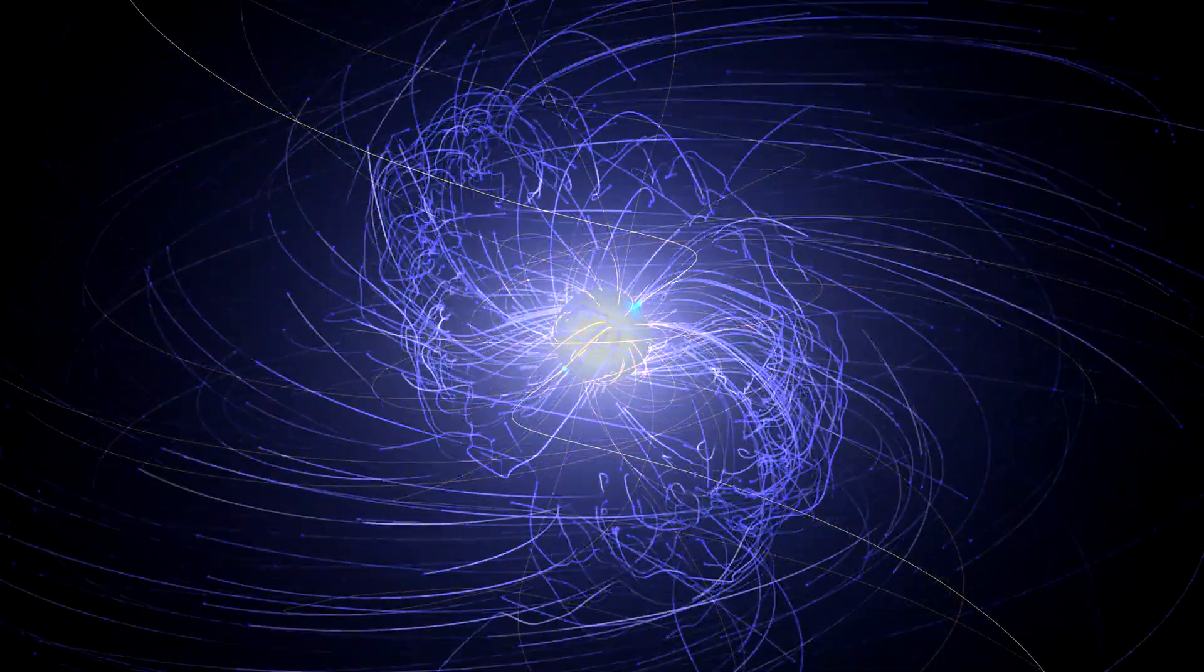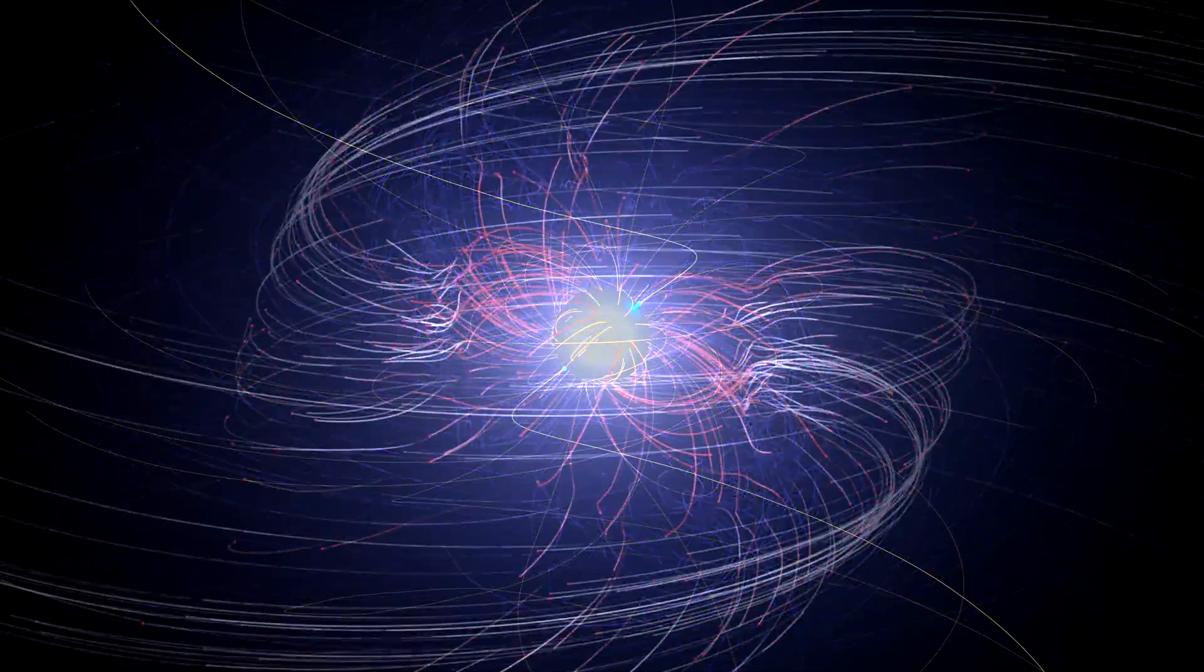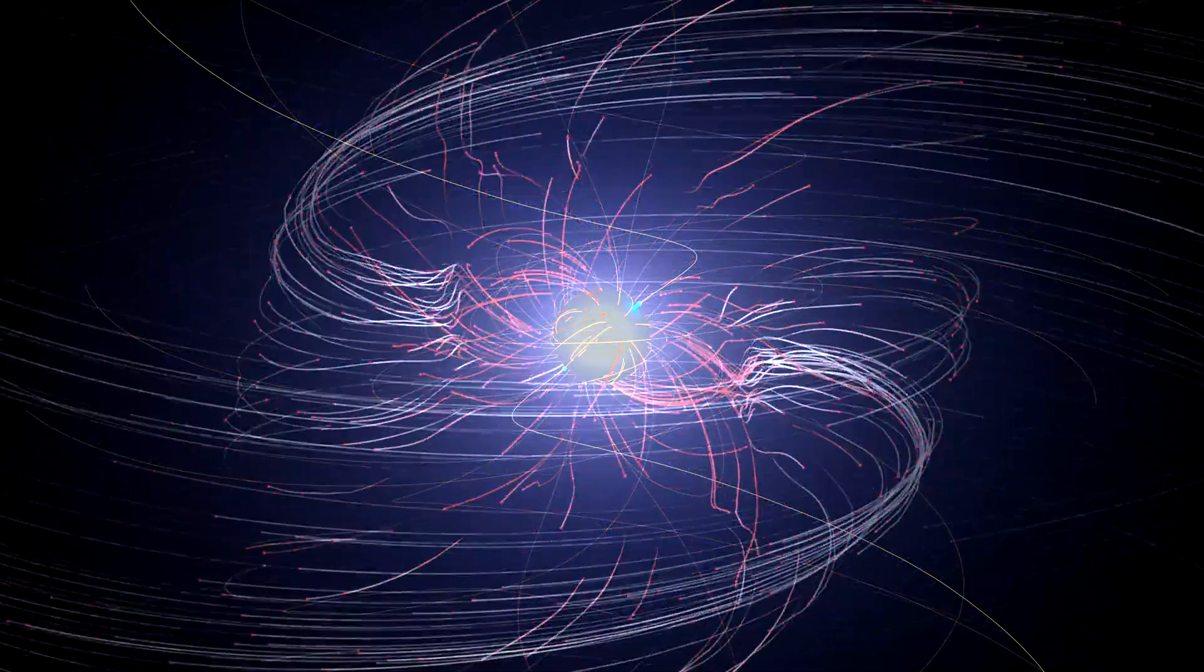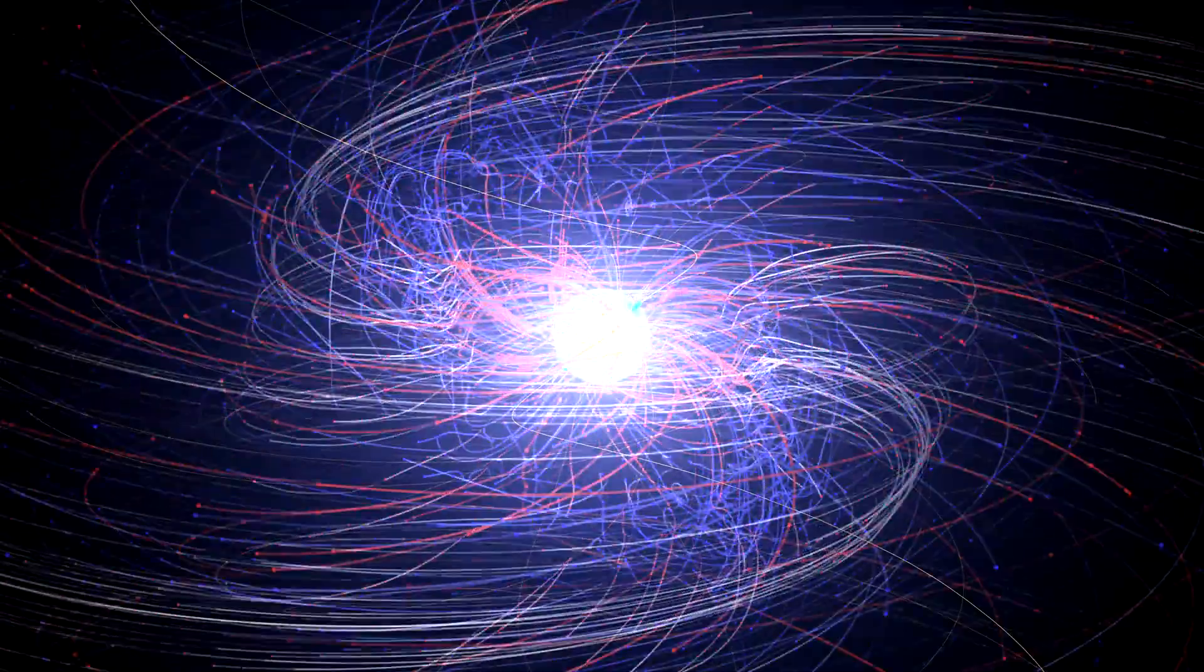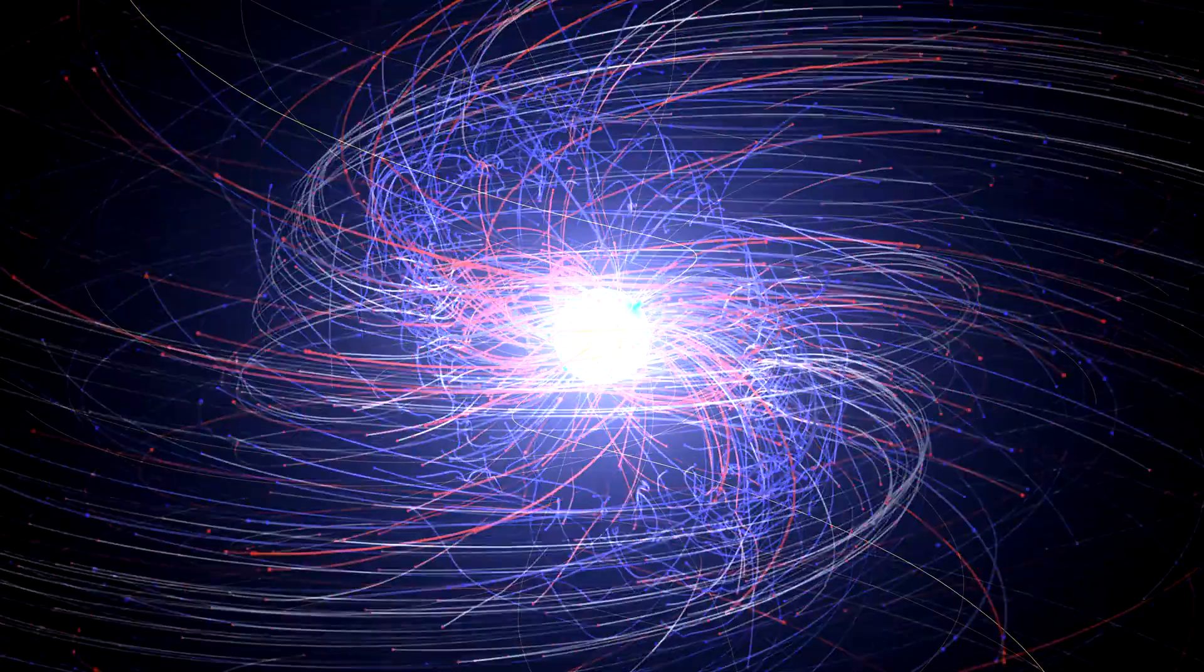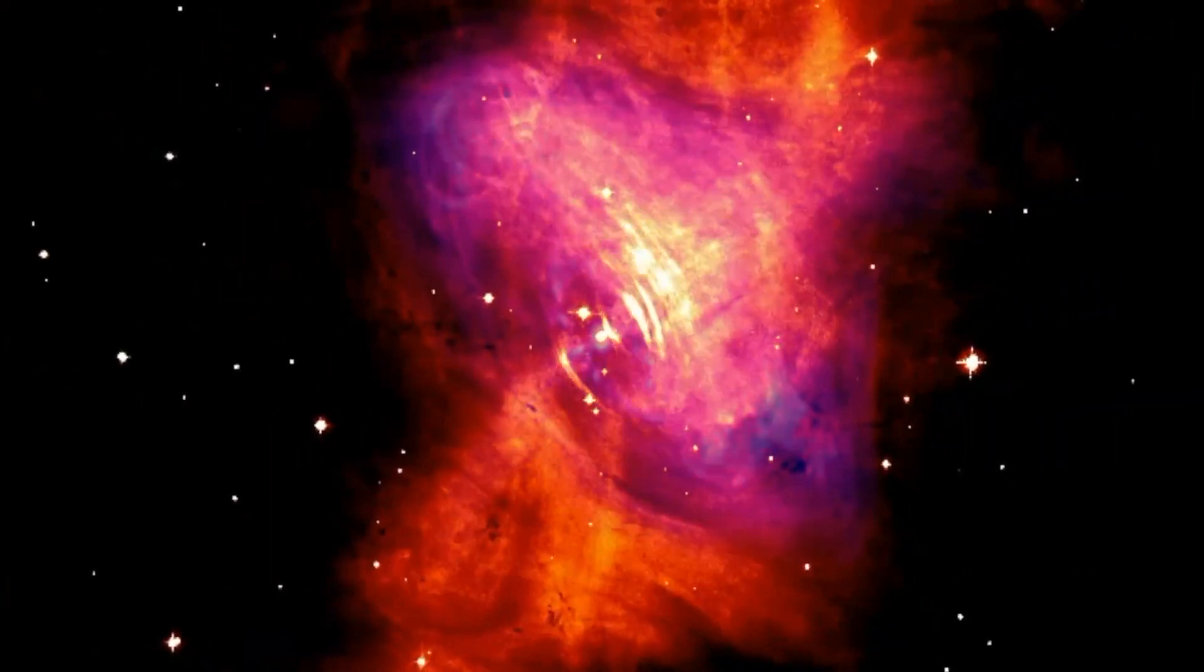Electrons tend to race outward from the magnetic poles. Positrons mostly flow out at lower latitudes along a relatively thin structure called the current sheet. Ultimately, these outflows lead to the formation of a powerful wind that extends far from the pulsar.